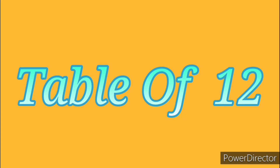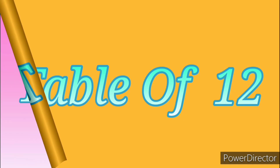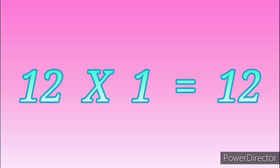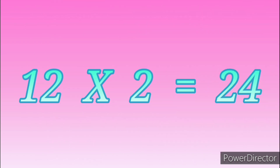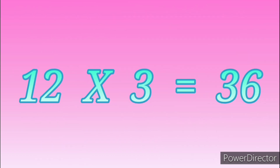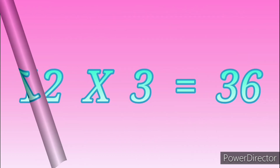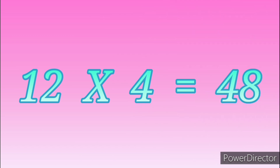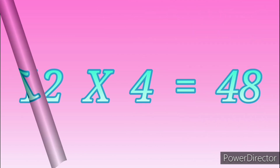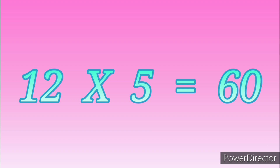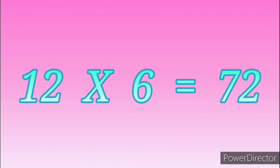Table of Twelve. 12 ones are 12. 12 twos are 24. 12 threes are 36. 12 fours are 48. 12 fives are 60. 12 sixes are 72.